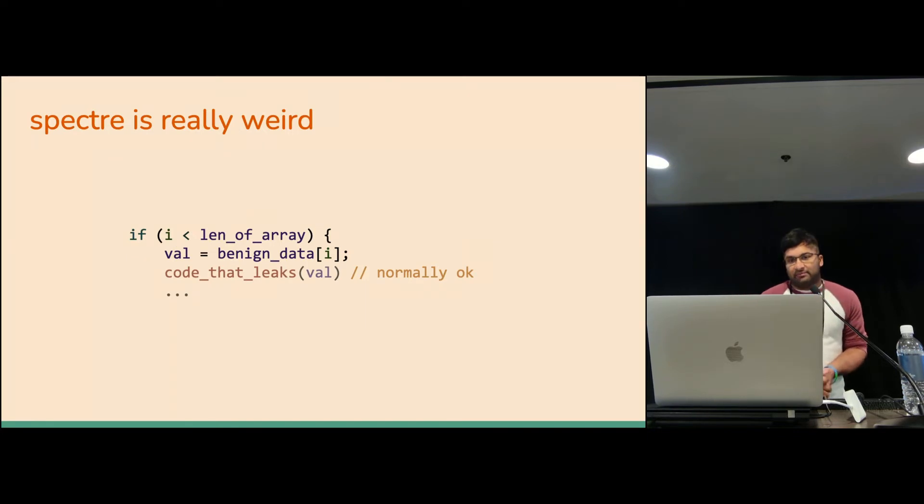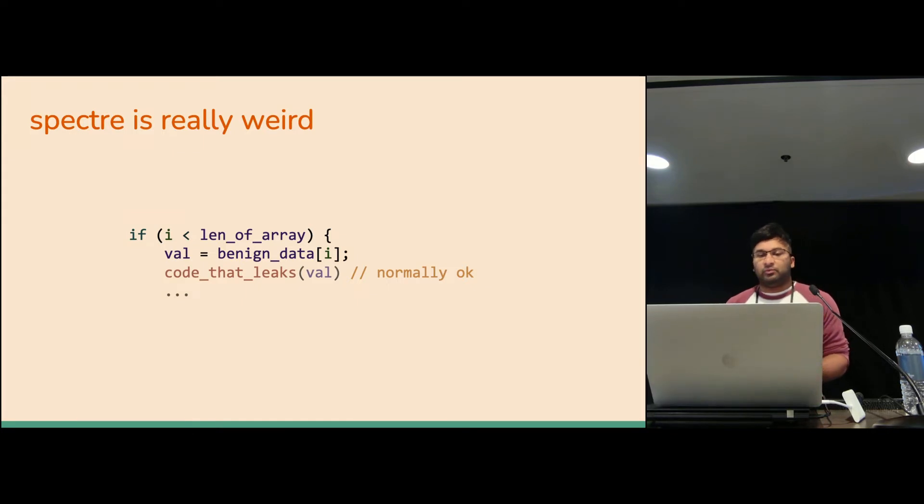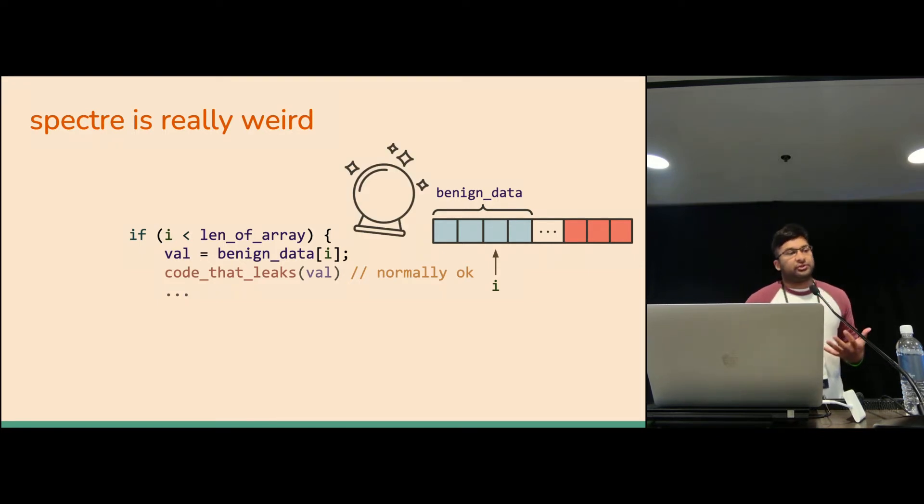I'll continue by way of example. Spectre is this really strange attack that kind of destroys how we think about how processors should function. In this example code, we're just accessing some array at some index with standard memory safety checks. We want to make sure that the index is within bounds of the array before we access it. So we have this benign data. We're accessing it somewhere within bounds. But processors don't actually execute instructions step by step.